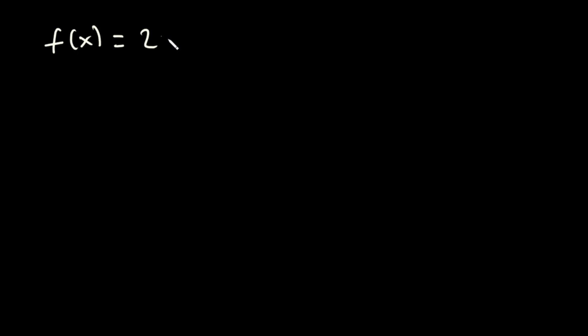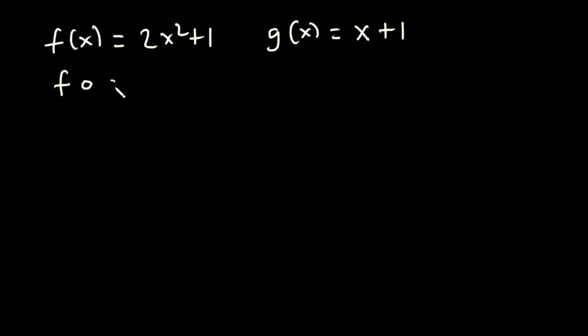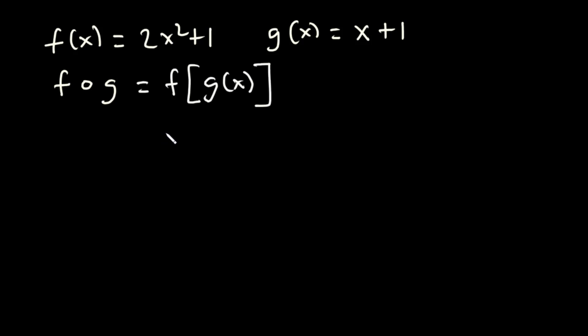In this video we are going to talk about composite functions. A composite function is generally a function that is written inside another function. So let's say we have f(x) = 2x² + 1 and g(x) = x + 1. How do we find f of g? f of g is a composite function which simply means g is inside of f.